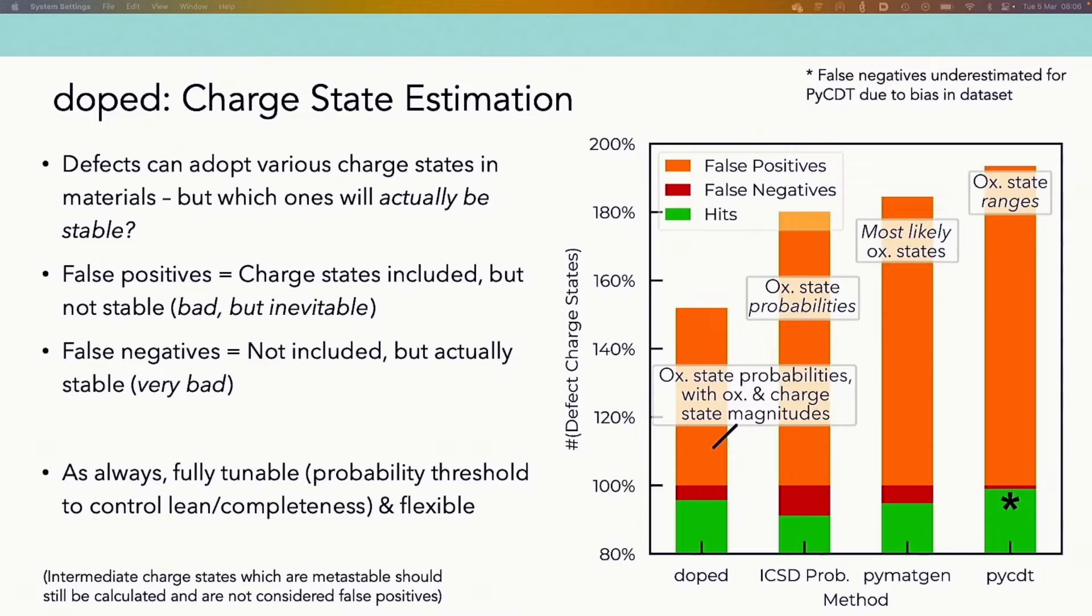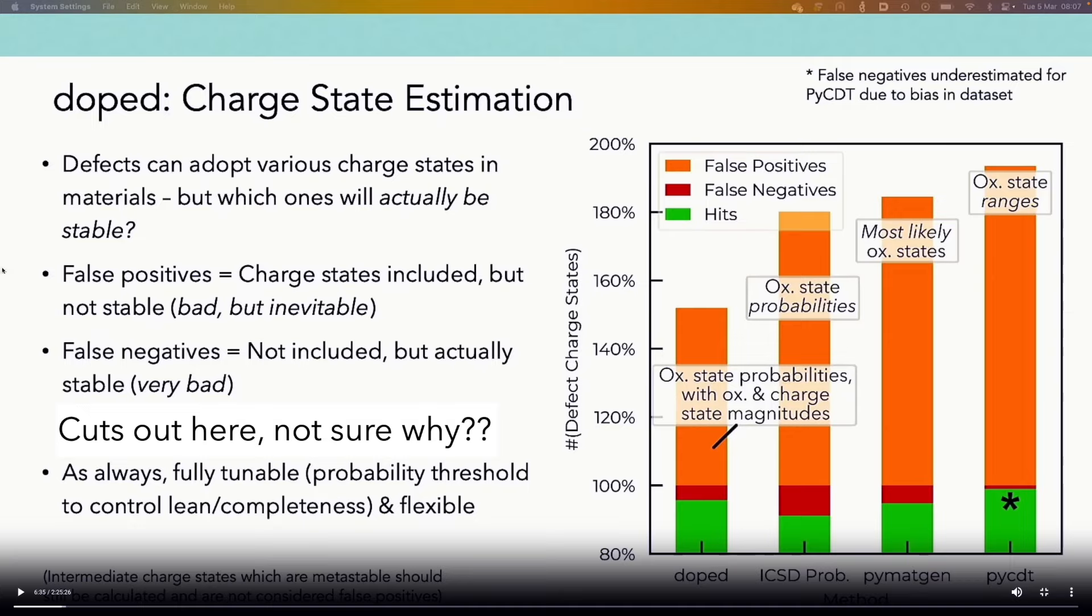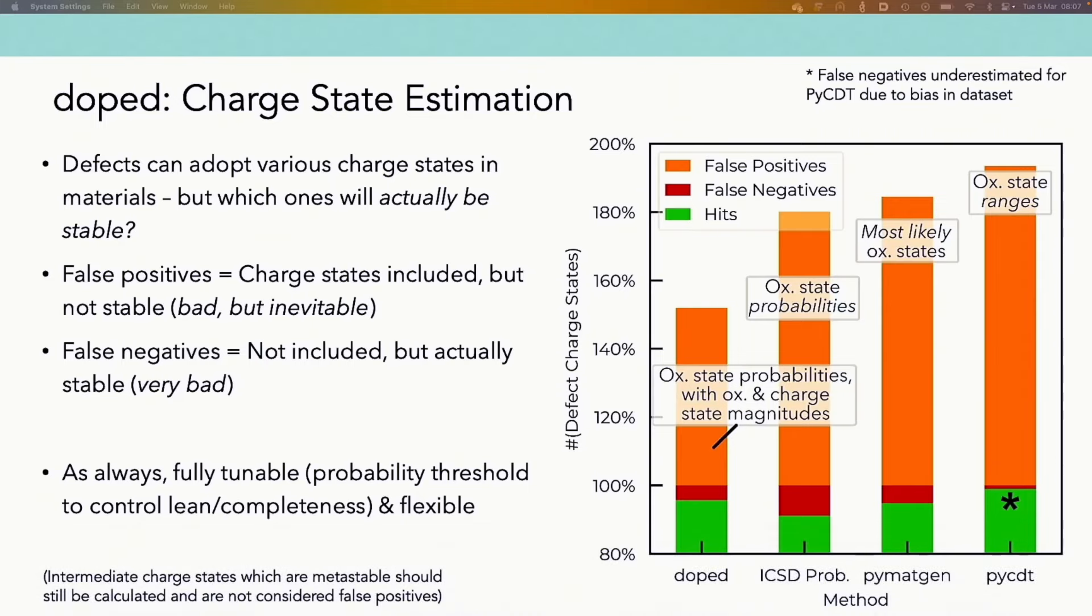So there are again some methods in the literature for trying to estimate these reasonable charge state ranges, mainly based on oxidation states. We've built on these approaches to also incorporate and featurize both oxidation state probabilities from the ICSD as well as oxidation and charge state information, and we're getting a significant enough improvement in our percentage of false positives, and again trying to improve the efficiency of our overall defect investigation.